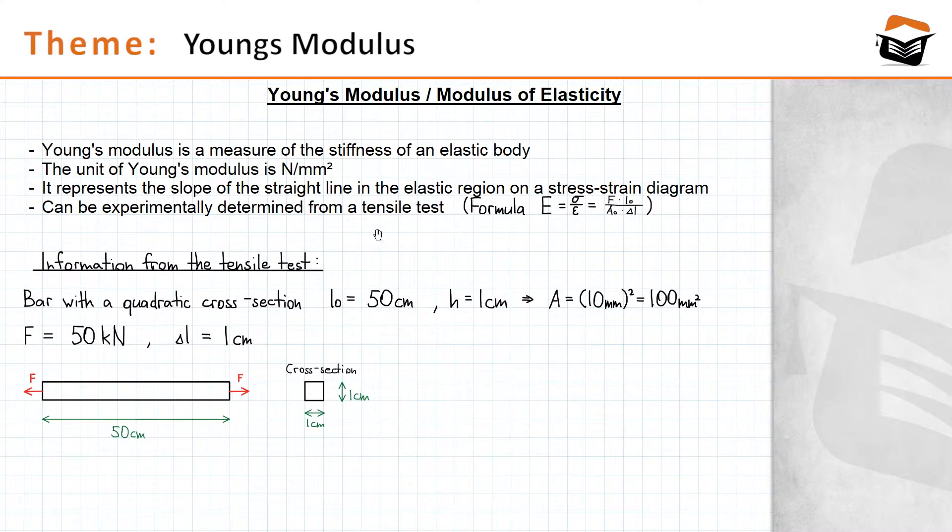Young's modulus can be determined experimentally from a tensile test, which we will do in the following. We have a bar with a quadratic cross section, and the initial length of that bar is 50 centimeters. If we subject that bar to a tension force of 50 kilonewton, the bar becomes expanded by one centimeter. The expansion is denoted by delta L, and delta L is one centimeter.